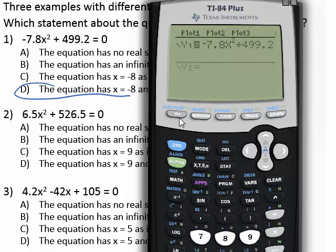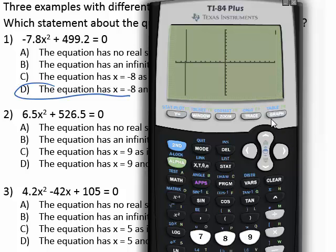So we can also check that by typing it into our y equals screen. Negative 7.8. Then you hit the x button squared. Plus 499.2 we hit the graph button.